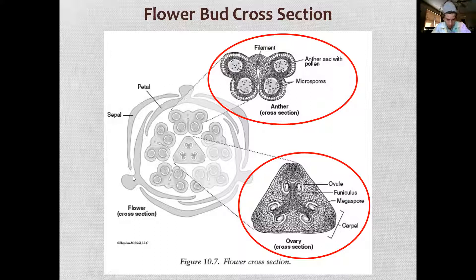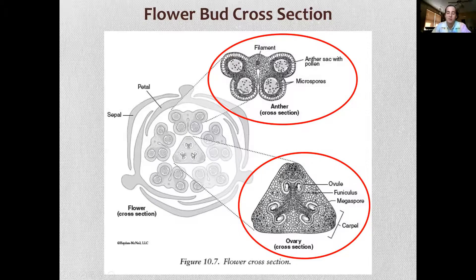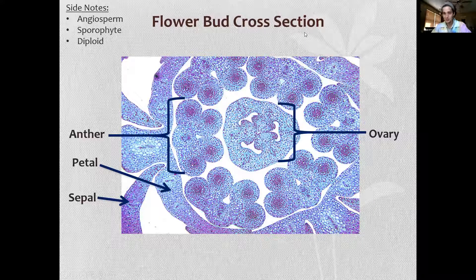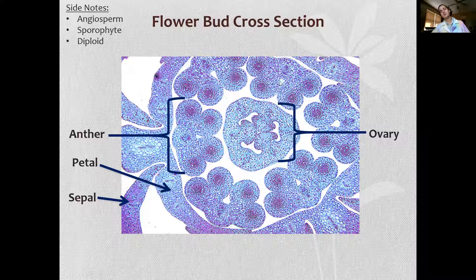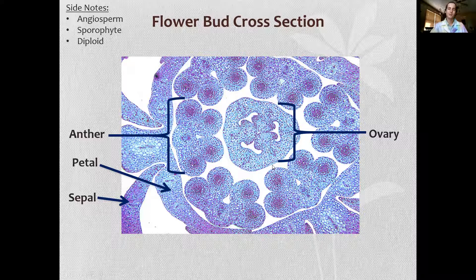Monocots have flower parts in multiples of three. How many petals do we have here? One, two, three. How many anthers? One, two, three, four, five. Which is why this drawing is totally wrong — which is also why when we look at our flower bud cross-section, you'll notice it has the correct number of anthers, because nature knows what it's doing better than that artist.